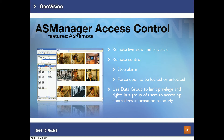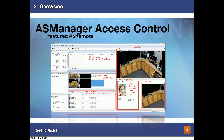AS Remote is an app you install on other PCs to connect to AS Manager. With AS Remote you can remotely view live view and playback of events, stop alarms, or force doors to be locked or unlocked. Different data group users with different privileges can remotely access AS Manager information. The AS Remote UI looks very similar to AS Manager itself, with alarm monitors, access monitors, live view, and user information with snapshots when access is granted.